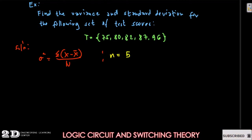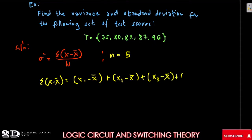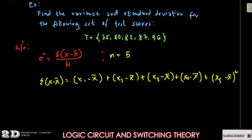We will now expand the summation of x minus x-bar squared. This is equal to x₁ minus the mean, squared, plus x₂ minus the mean, squared, plus x₃ minus the mean, squared, plus x₄ minus the mean, squared, plus x₅ minus the mean, squared. So all of these terms are squared.